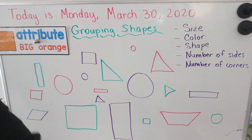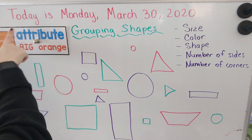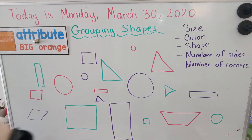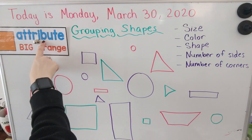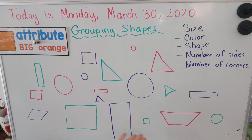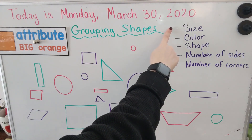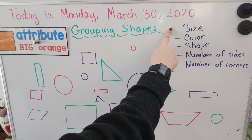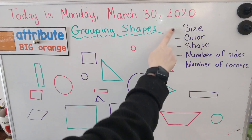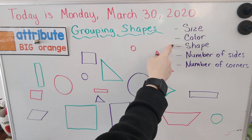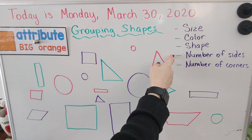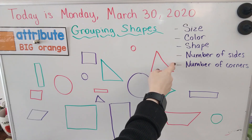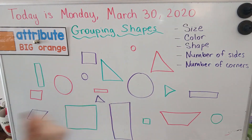One way to group shapes is by talking about their attributes. Can you say that word? Attribute. Attributes are different ways that we can describe all of these shapes. So we can group the shapes and describe them by their size, by their color, by their shape, by their number of sides, and also by the number of corners. These are just some examples that we're going to go over today.